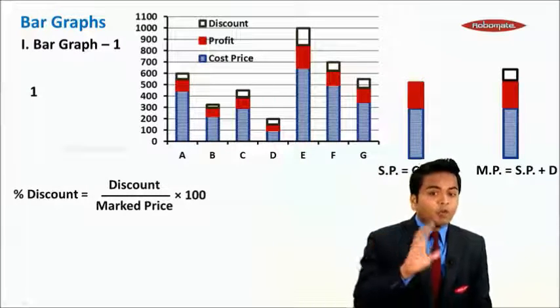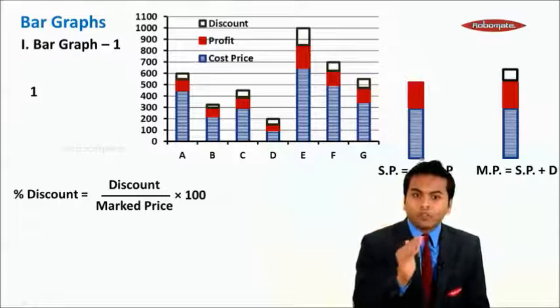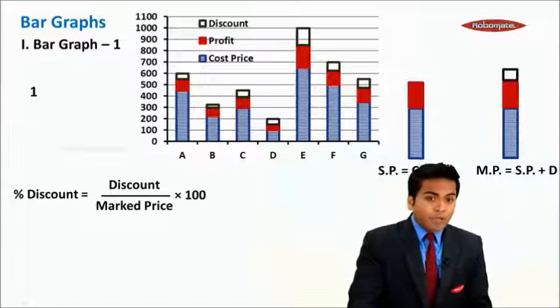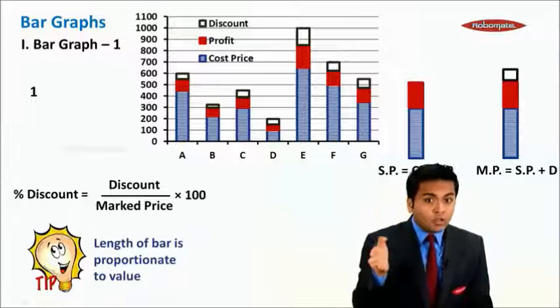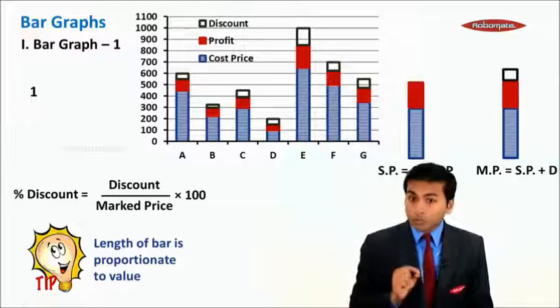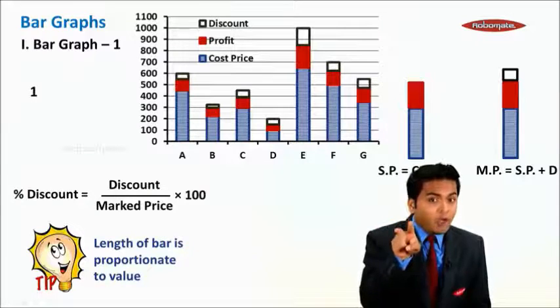What you want to find out is discount percentage, and it is given as discount divided by market price times 100. Now instead of using the values given on the left-hand side, what we can use is: consider this length of bar will be proportionate to its value.